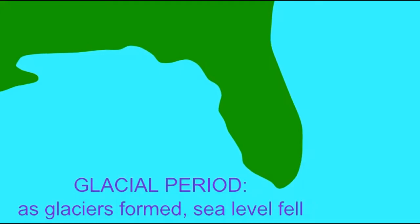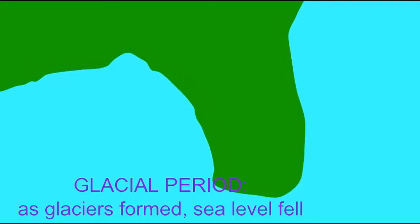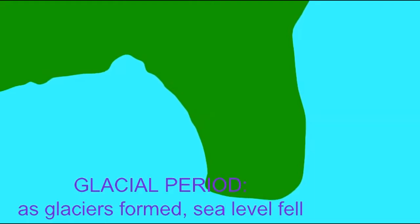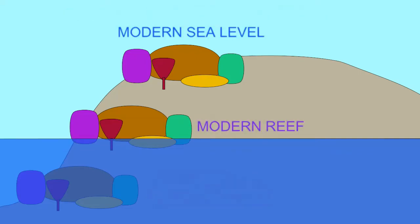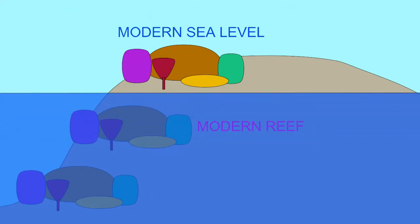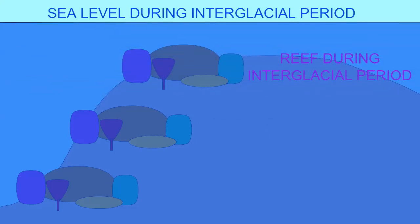As sea levels rose during the interglacial periods and fell during the glacial periods, the position of corals changed. Corals need to occur in water of a specific depth since they perform photosynthesis and need sunlight. As a result, some of the land which exists in Florida and the Keys and Islands was once coral when sea levels were higher, and the changing sea level during ice ages affected corals, which helped to add material to some of these coastal areas.